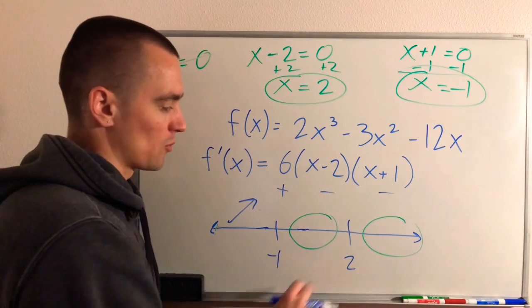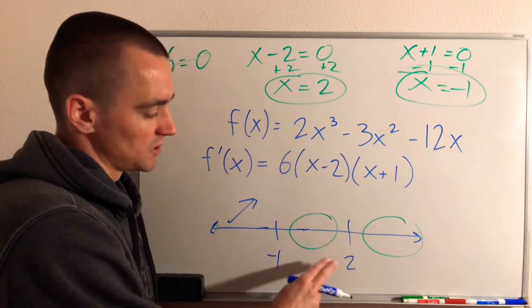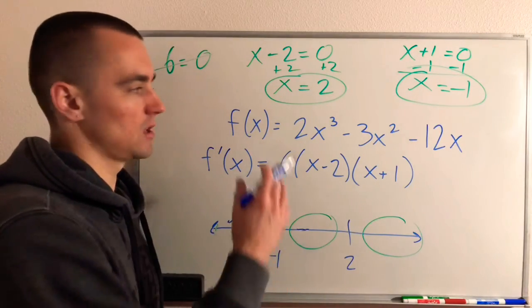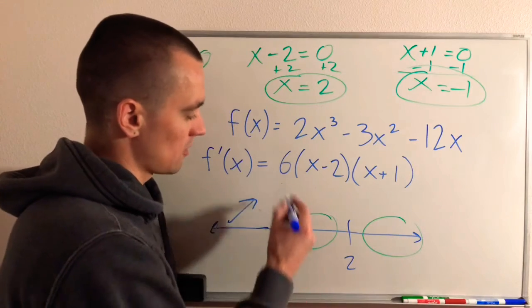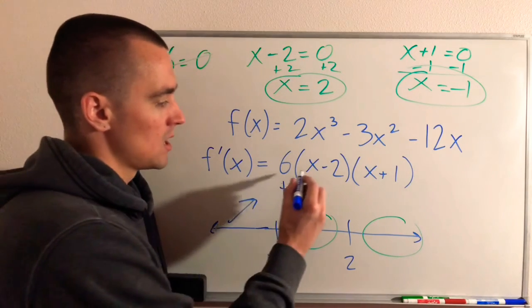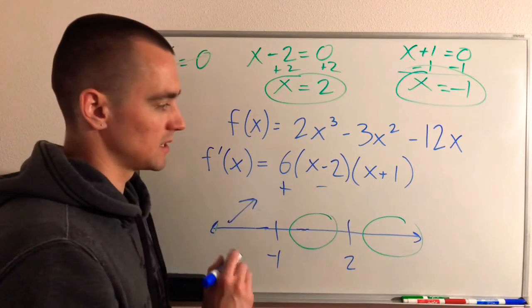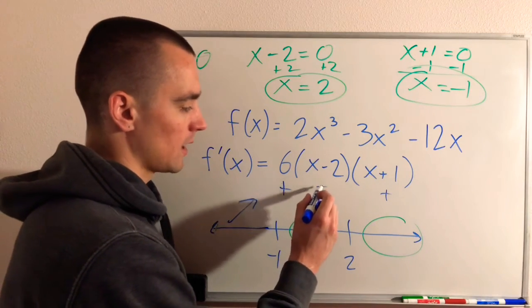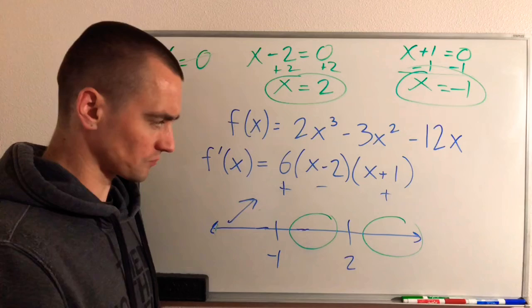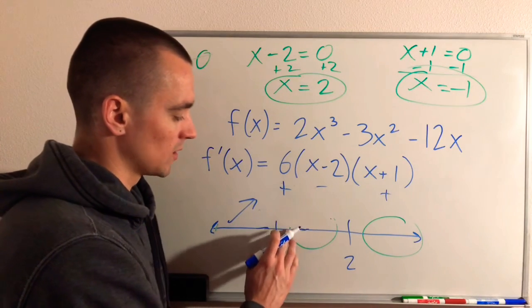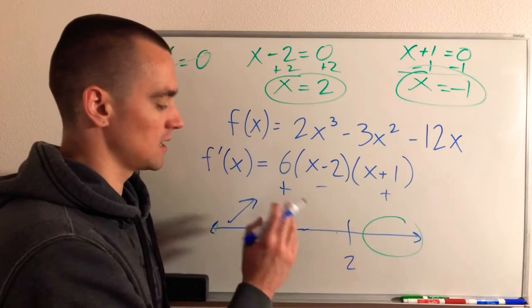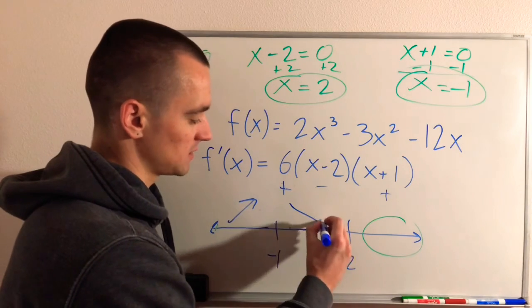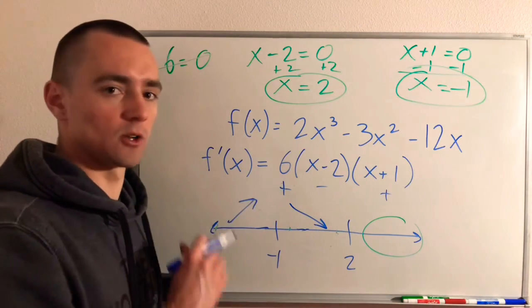Now let's plug in x equals 0, which is between negative 1 and 2. Plugging that into f prime: 6 is still positive, 0 minus 2 is negative 2 — that's negative — and 0 plus 1 is positive 1. So we get positive times negative times positive, which gives us a negative number. That tells us f prime is negative between x equals negative 1 and x equals 2, so the slope of f is negative, which means f is decreasing — it's going down on that interval.